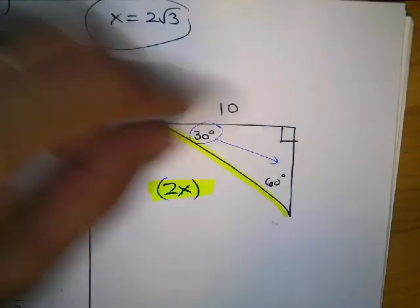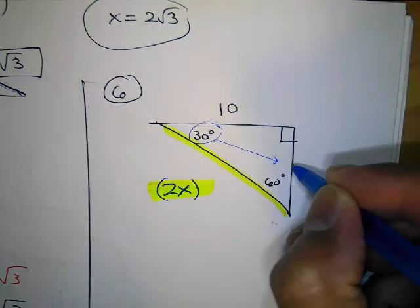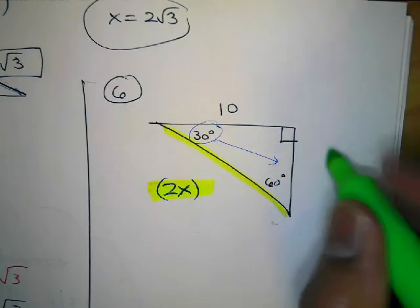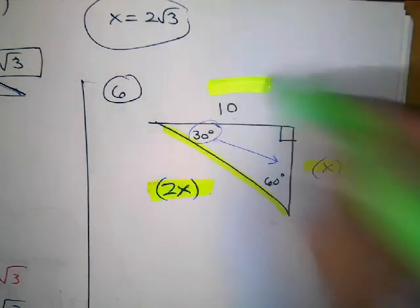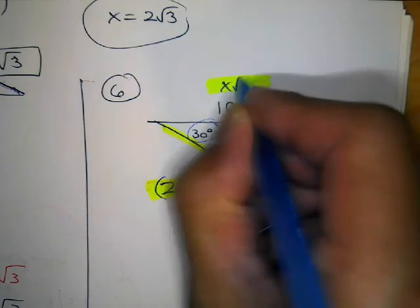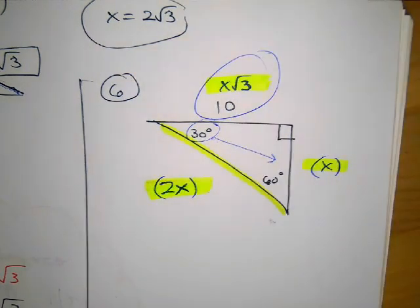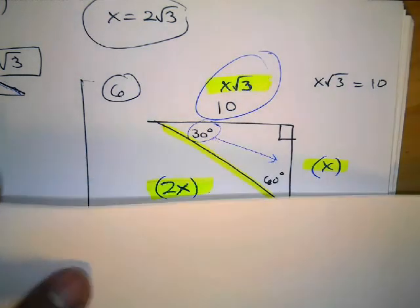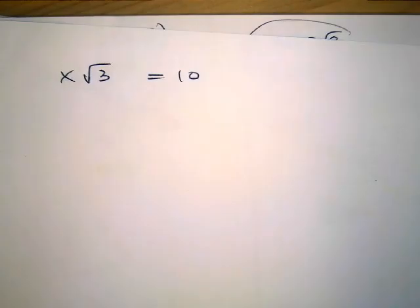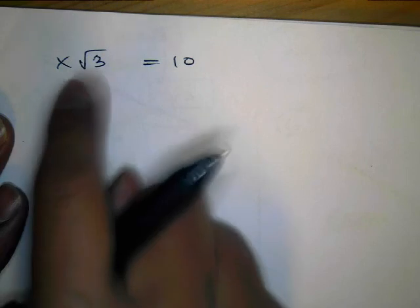Now the most important thing: label the sides correctly. Is this the hypotenuse side? No — the hypotenuse is the other one, which is 2x. Then look for the side opposite 30 — that's the x side. The given side of 10 is the x√3 side — that's the last one, opposite 60. So x√3 equals 10.